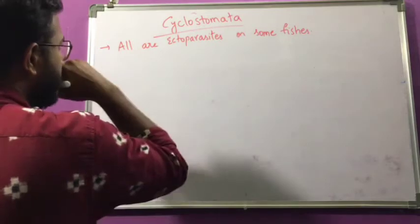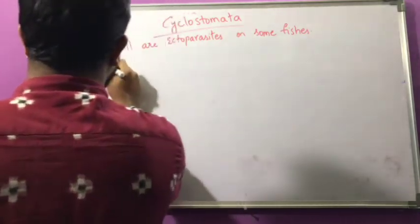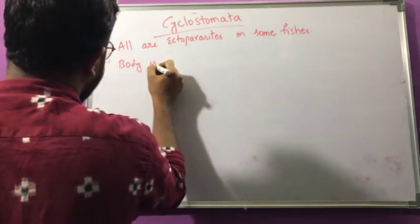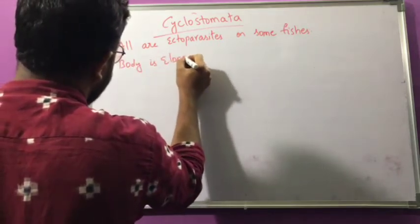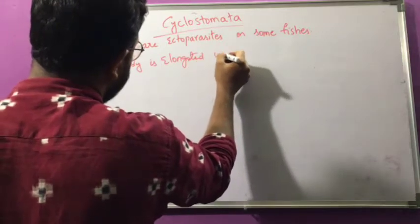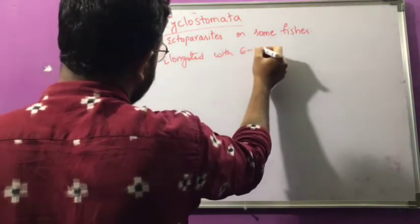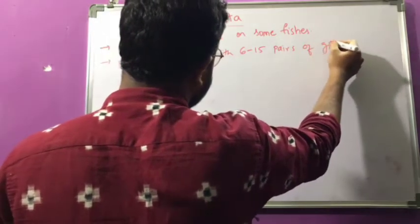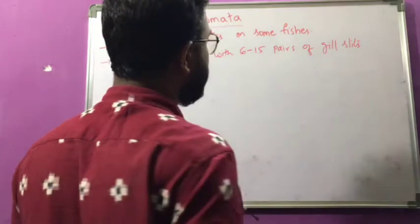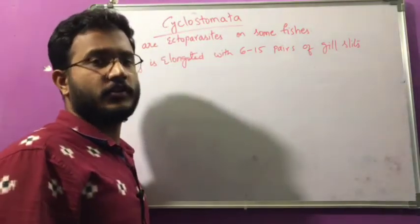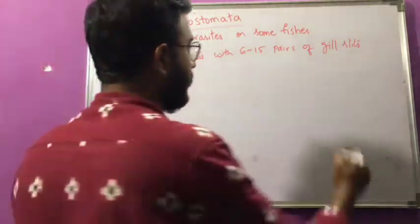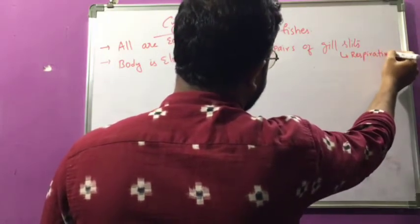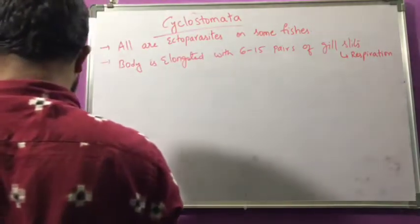All animals belonging to the class Cyclostomata are ectoparasites. The body is elongated with 6 to 15 pairs of gill slits — the highest number of gill slits found in any class. These gill slits are helpful for respiration.